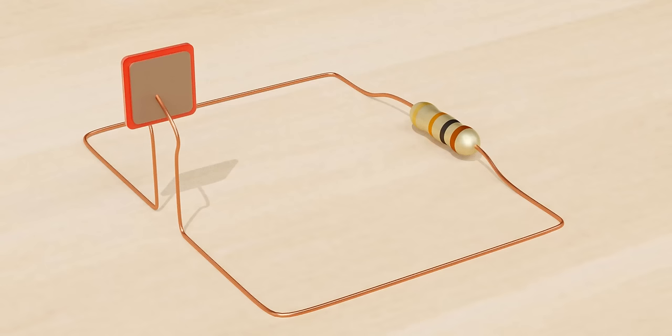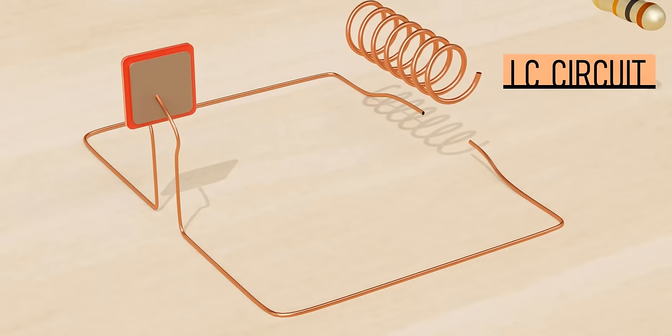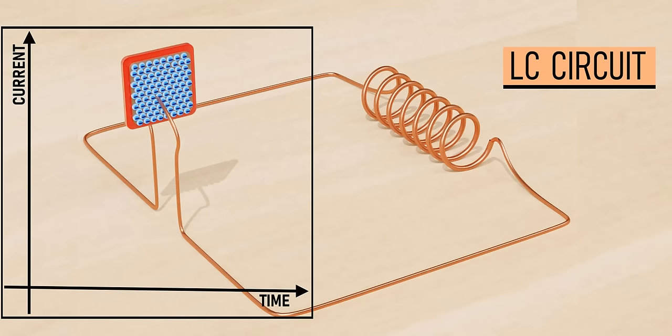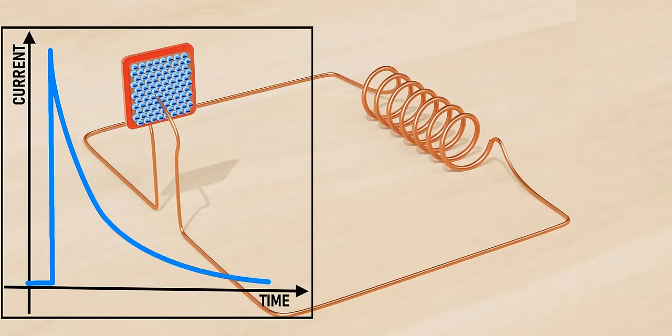Now let's see what will happen if the resistor is replaced with an inductor. Here again, the capacitor is fully charged initially. It's quite logical to expect a huge current flow at the beginning, then the current would reduce as in the previous case. However, this will not happen in practice.